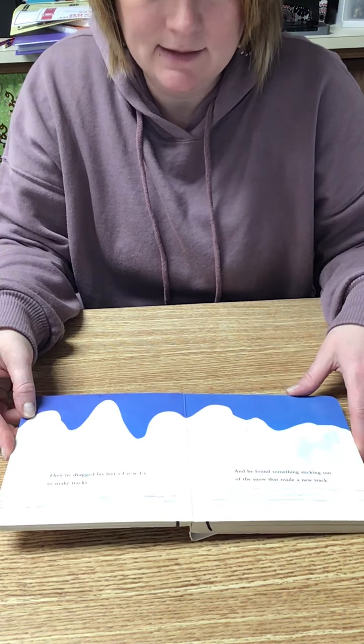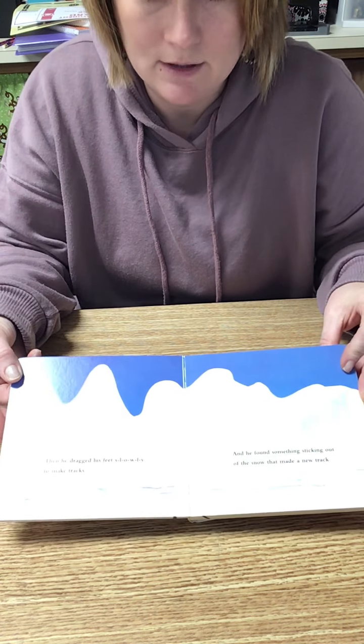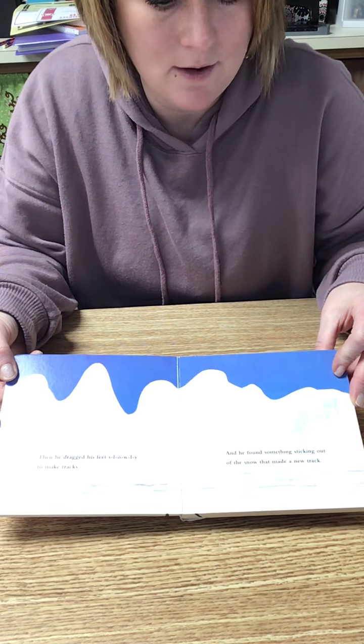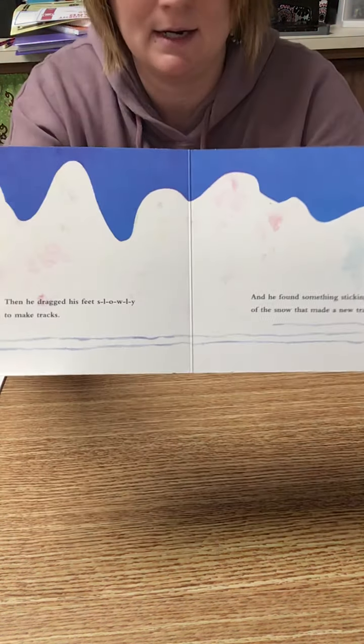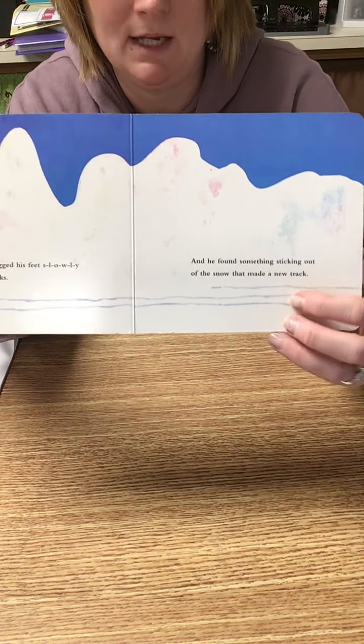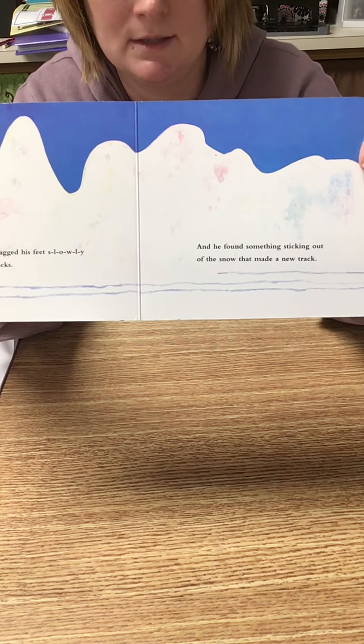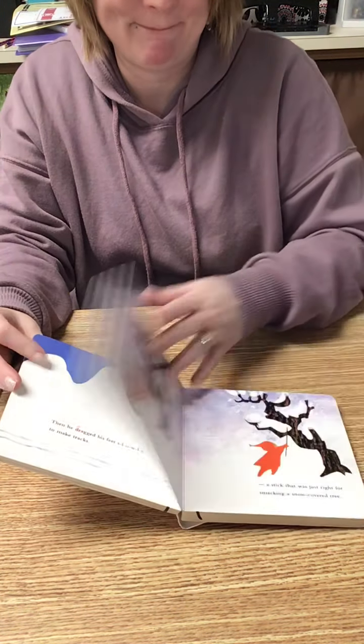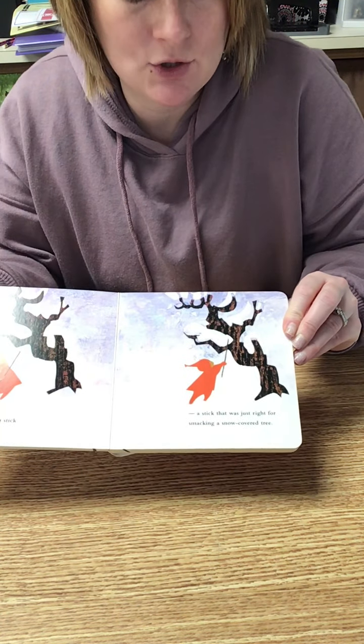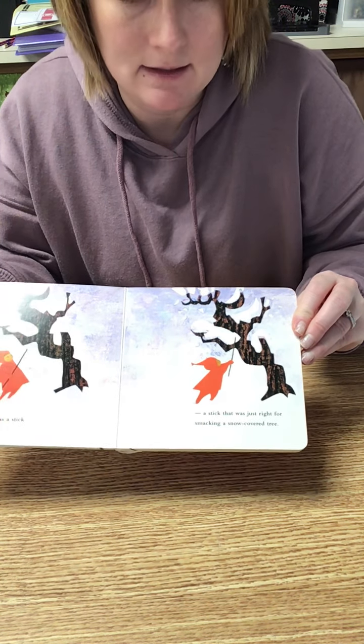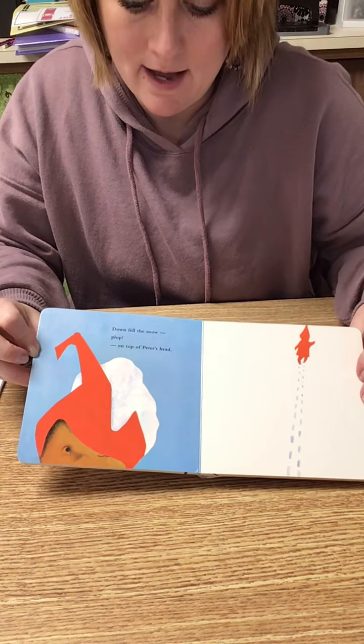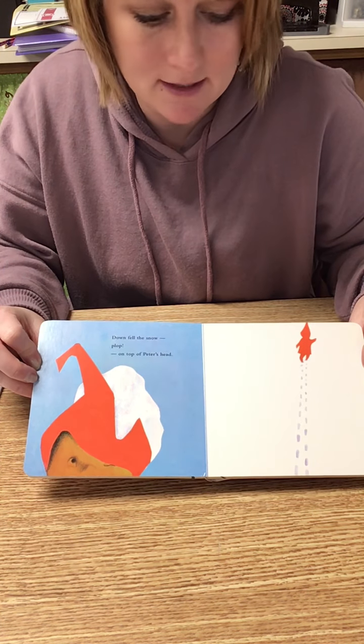Then he dragged his feet slowly to make tracks. And he found something sticking out of the snow that made a new track. So what do you think he could have found that he was making this third track with? Let's see. It was a stick. A stick that was just right for smacking a snow covered tree. Down fell the snow plop on top of Peter's head.